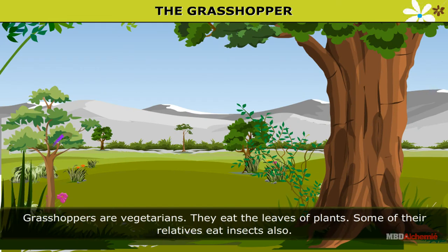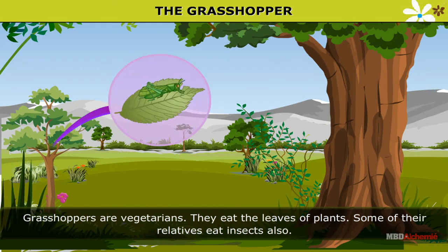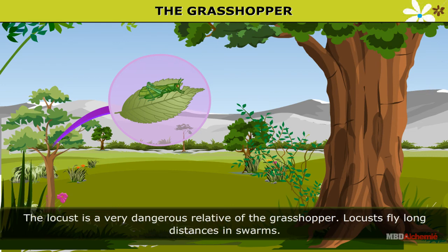Grasshoppers are vegetarians. They eat the leaves of plants. Some of their relatives eat insects also. The locust is a very dangerous relative of the grasshopper.